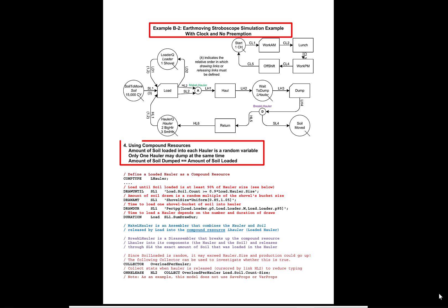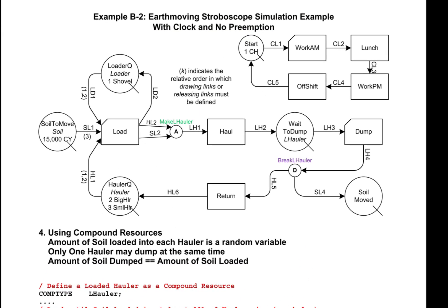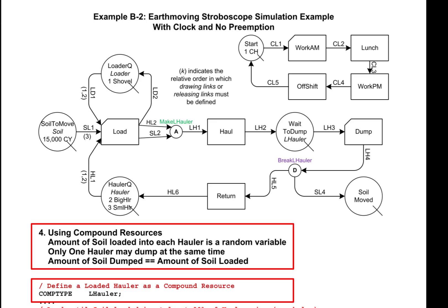This presentation introduces compound resources, assemblers, and disassemblers. Many processes involve vehicles or containers that contain other resources which travel through the network. When vehicles or containers enter queues, the resources they contain must also wait with them and be released when the vehicle or container is drawn by the following combi. Stroboscope allows us to model vehicles or containers by using compound resources.